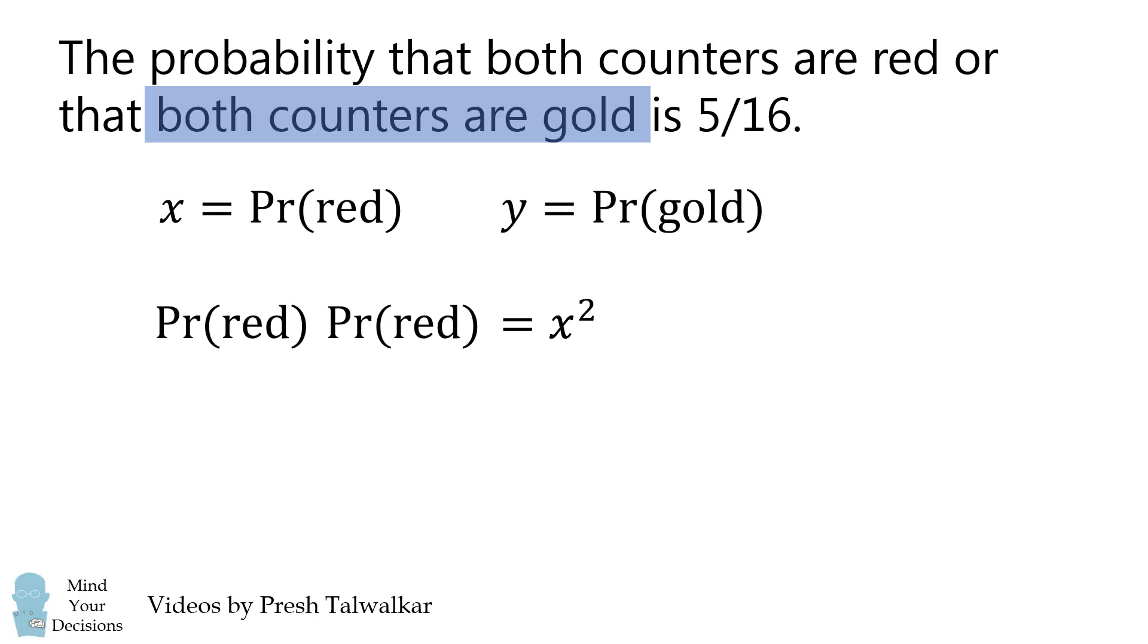We can do a similar calculation for the probability that both counters are gold. We need a gold counter on the first draw, and then the second draw. This will be y times y, which is y squared.